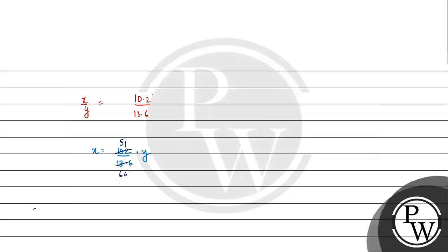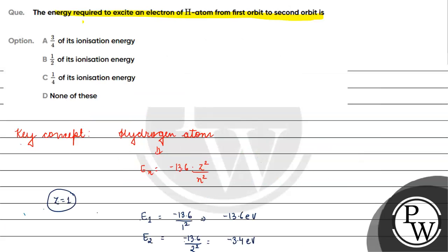Simplifying 10.2 by 13.6: cancelling common factors, 17 is a common factor — 17 goes into 51 three times and 17 goes into 68 four times — giving us 3 by 4. So x equals 3 by 4 of y, where y is ionization energy. The correct answer for this question is option A. I hope you understood it well. Thank you and all the best.